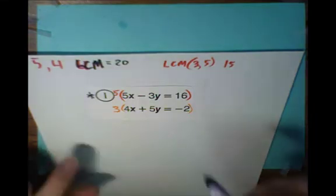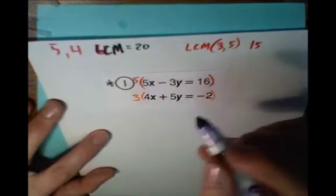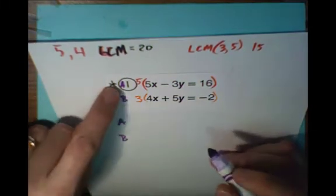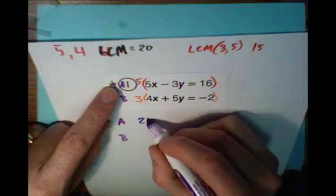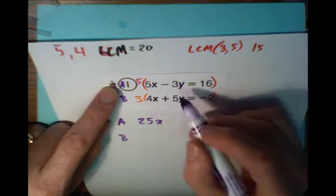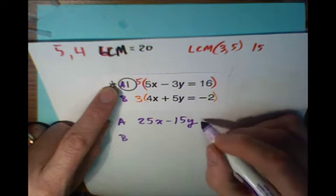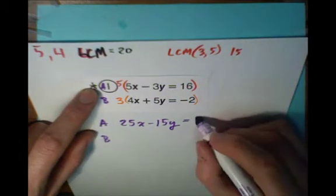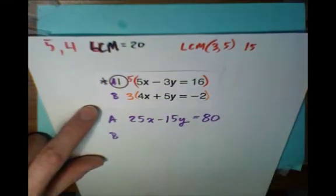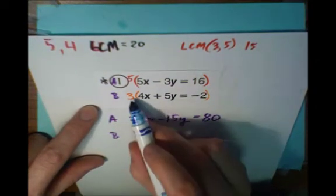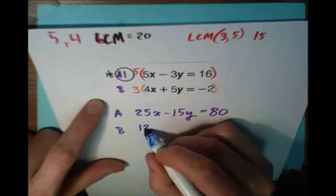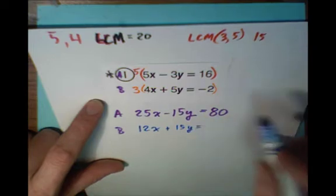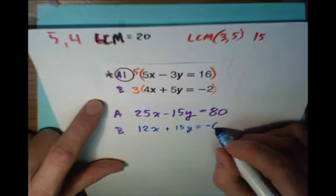So let's write these two equations. Equation number 1, or equation number A. I like to label my equations. So this first equation, we're going to multiply it by 5, and I get 25x minus 15y equals 5 times 16 is 80. The second equation, after I multiply this by 3, the entire equation by 3, I get 12x plus 15y equals negative 6.